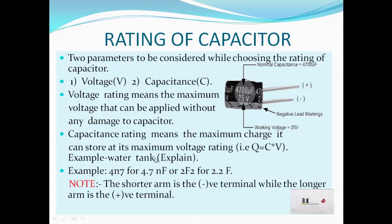This is similar to a water tank — if a tank holds 500 liters and you put in 550 liters, the extra 50 liters is wasted. That is the rating of the tank, and similarly is the rating of the capacitor. You will find ratings written in forms such as 4.7n, where 'n' represents nanofarad, or in Farads.